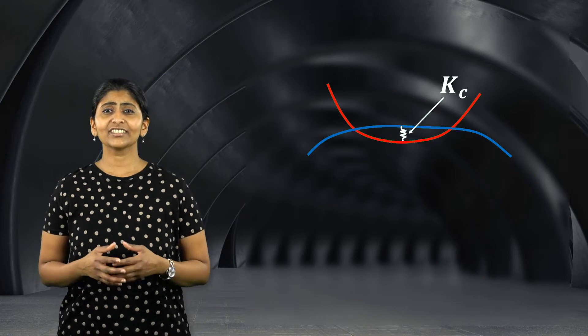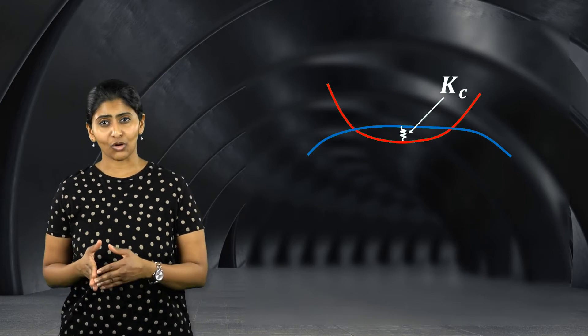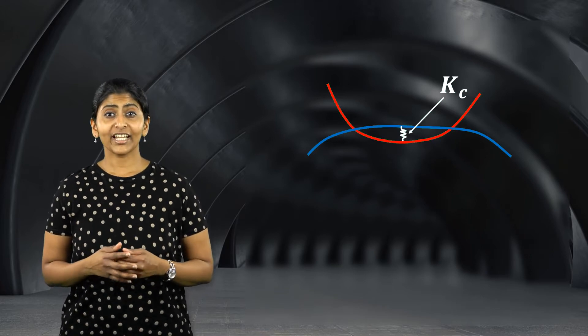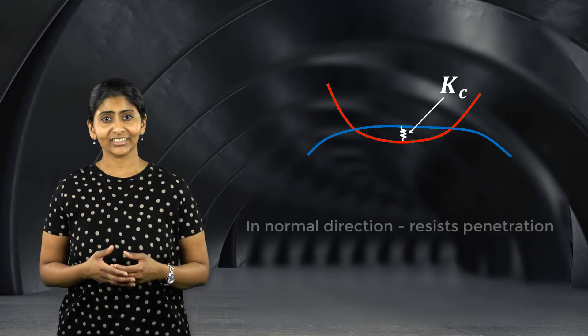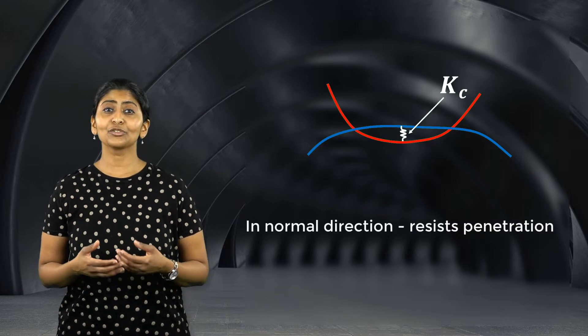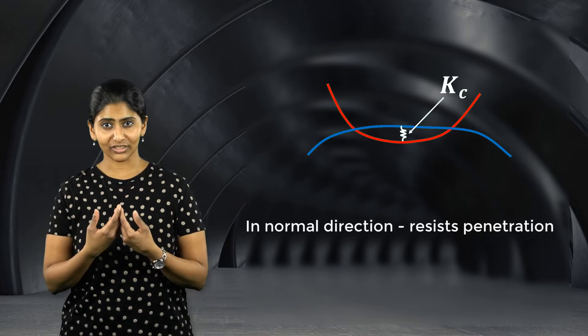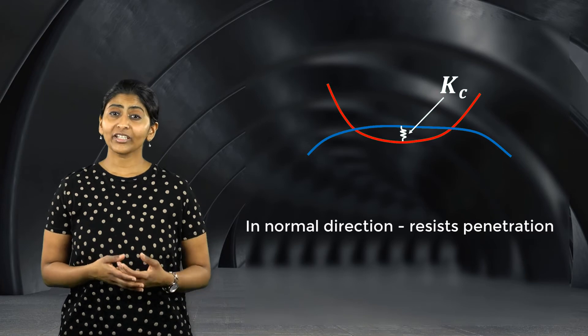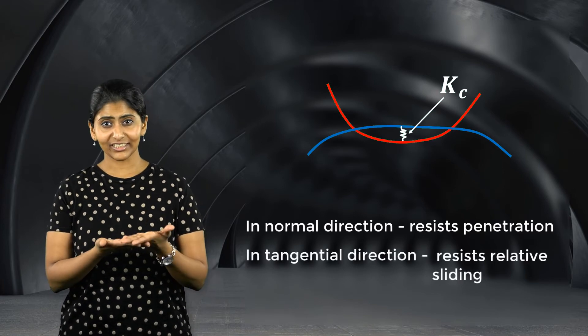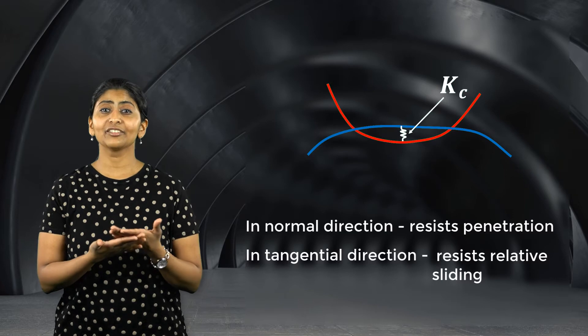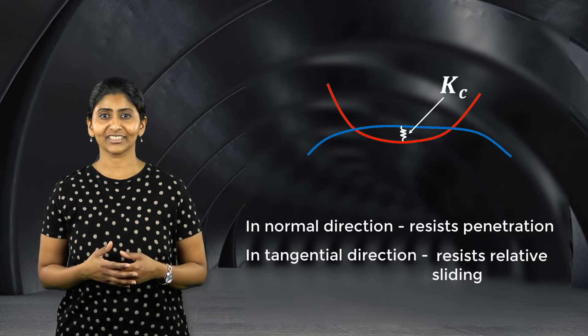Contact stiffness is used both in the normal and tangential directions. Contact stiffness in the normal direction provides resistance to penetration between the two surfaces, while contact stiffness in tangential direction provides resistance to relative sliding between the two surfaces.